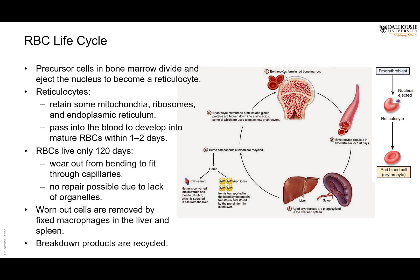Reticulocytes are released into the blood circulation and within two days they mature into fully mature RBCs after losing the remaining organelles — including ribosomes, endoplasmic reticulum, and mitochondria. Once their lifespan is done and they accumulate defects in the cell membrane, they are recognized by macrophages in the liver and spleen.